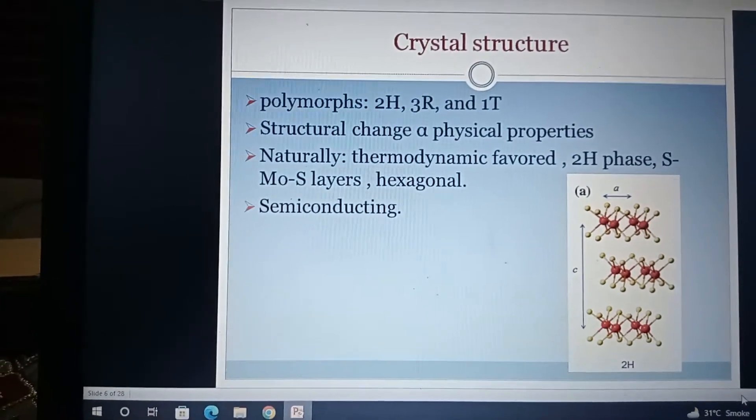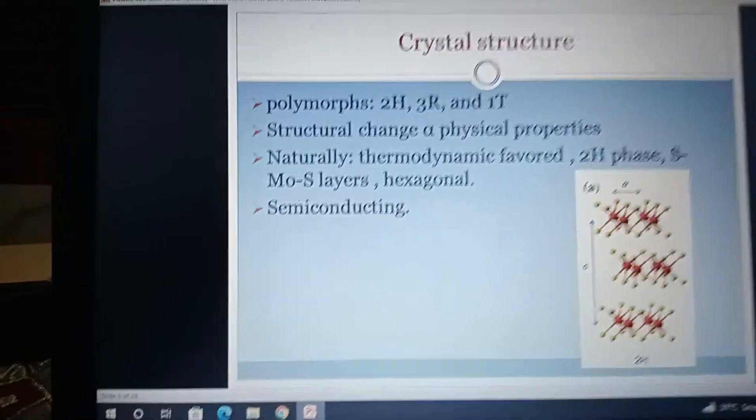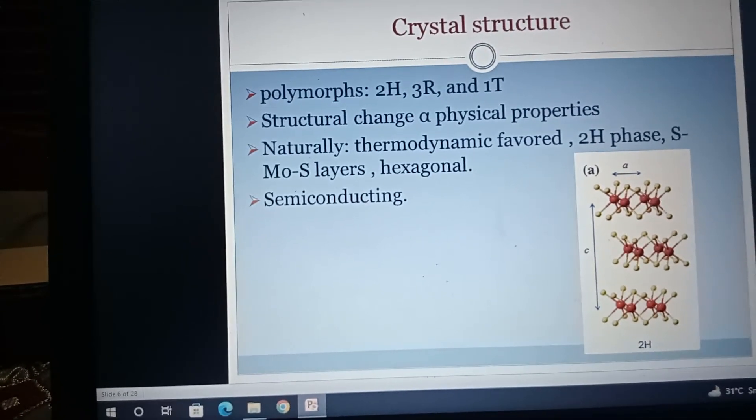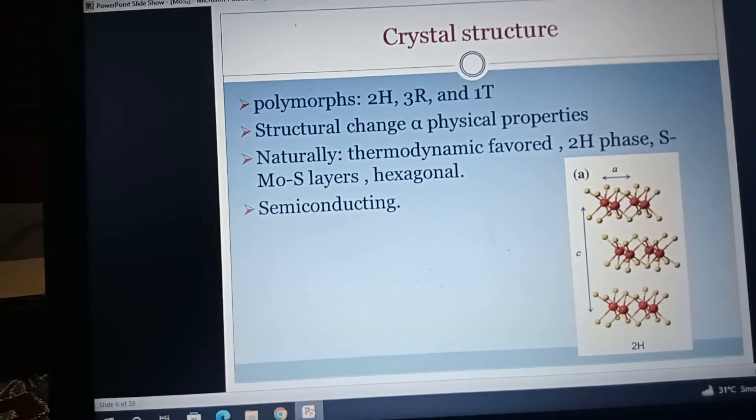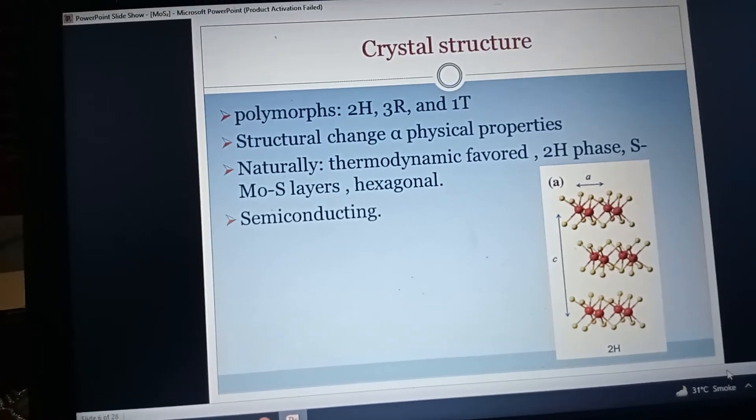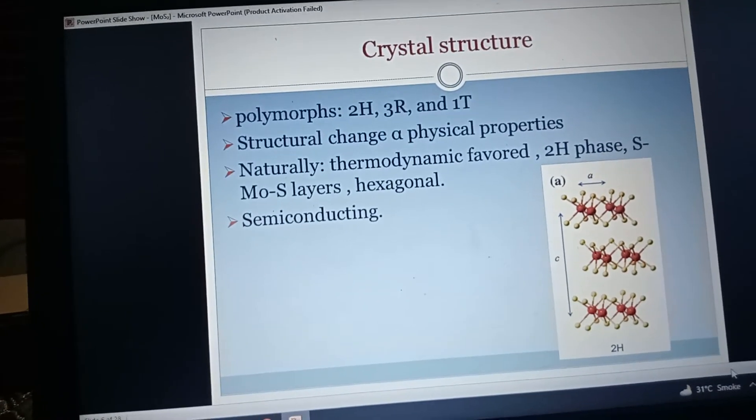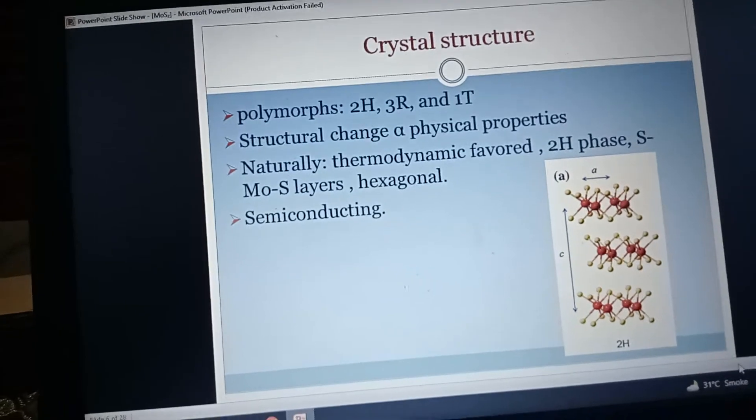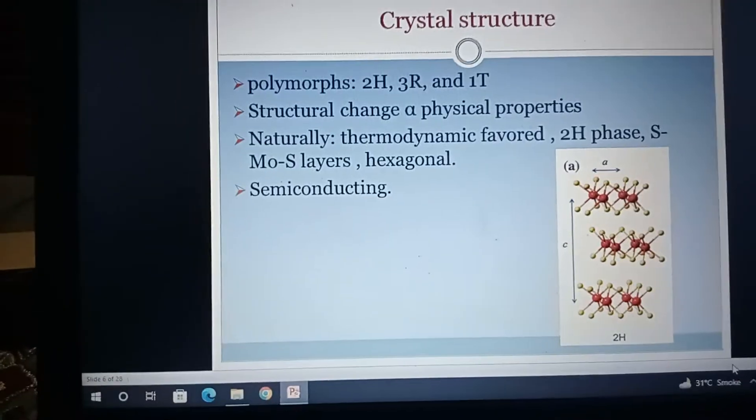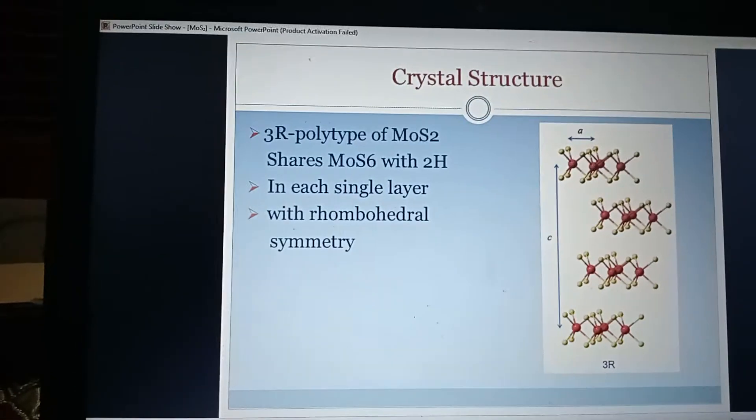Crystal structure polymorphs: it exists in different states in the universe. MoS2 has four types of polymorphs: 2H, 3H, 3R, and 1T. These are states which exist in nature. Structural change affects physical properties. Naturally thermodynamically favorable is MoS2 2H phase. MoS layers are hexagonal, and its nature is semiconducting.